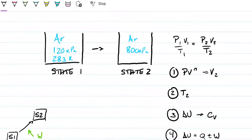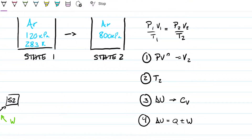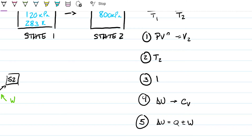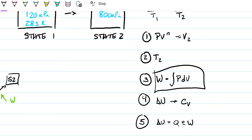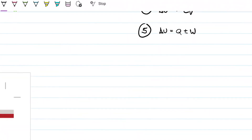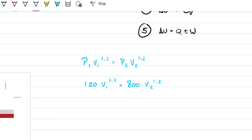Work being done by the piston I'll calculate using the integral of P dV. Note this is a special case because P times V to the N is a constant for a polytropic process. Let's do it from scratch. So first, let's find V2. I'll use the polytropic relation: P1 times V1 to the 1.2 equals P2 times V2 to the 1.2. P1 is 120, P2 is 800. Note that what I get out of this is a relationship between V1 and V2, not actual values.